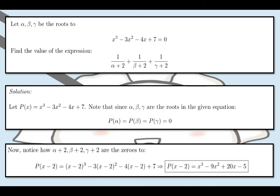Hello everybody, so for today let's try to answer this item from the field of algebra. Let α, β, and γ be the roots to x³ - 3x² - 4x + 7 = 0. Find the value of the expression 1/(α+2) + 1/(β+2) + 1/(γ+2).